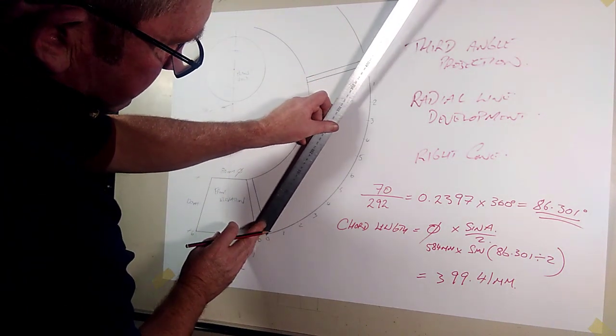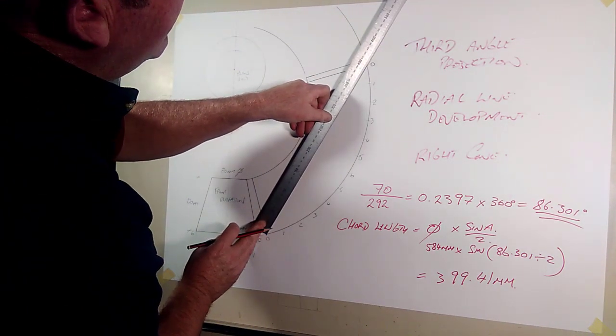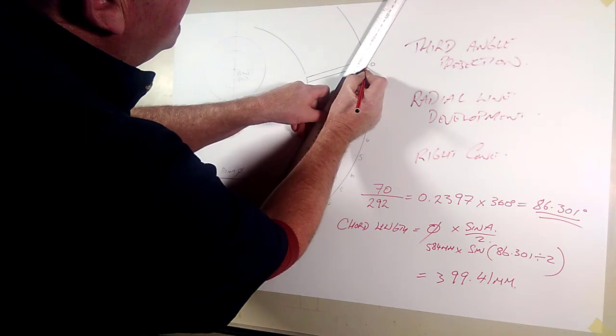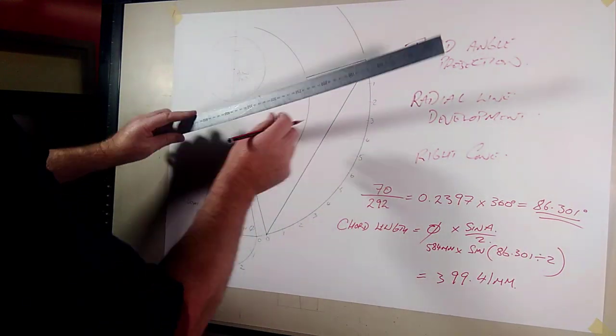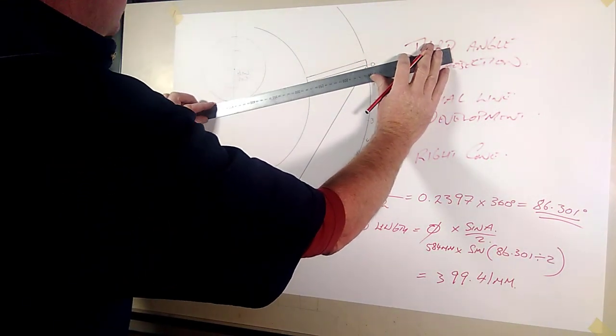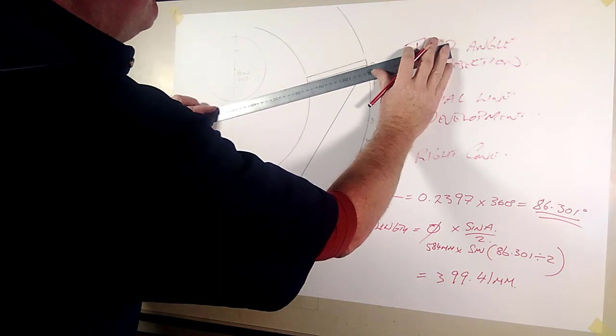If I was to run the ruler across here and I marked it at 399mm, that's a better way of describing it actually. I made a bit of a fool of myself there.